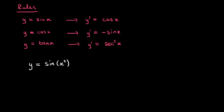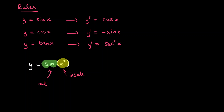In other words, what have we got here? We've got one function, which is the x squared function, which is inside of the trigonometric function, inside the sine. So I'm going to label this — this is the inside function, the x squared. And this is the function on the outside, which is the sine function.